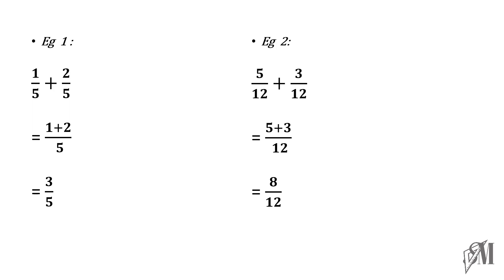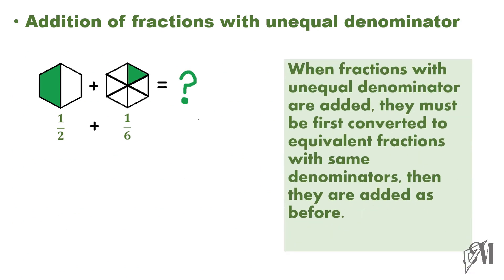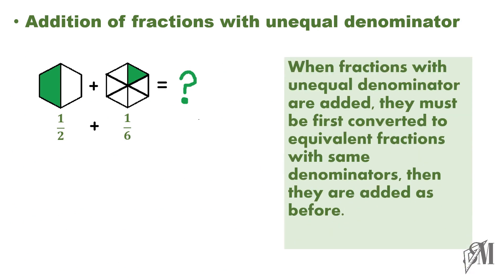Now, let us see how to add fractions with unequal denominators. Look at this example: 1 over 2 plus 1 over 6. In this case, if the denominators are unequal, before adding the fractions, we have to convert the two fractions to equivalent fractions with the same denominator. And then they are added just like before.